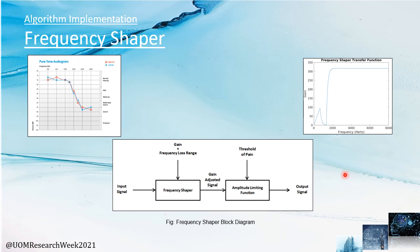The final step of the speech enhancement process is the gain adjustment of the hearing aid. For that, we used a frequency-shaping function. According to each hearing-impaired individual, referring to their audiogram, we can set the hearing loss range and the gain needed to make that range audible to the patient. We also control the maximum output so as not to surpass the pain threshold of the individual. Here you can see an audiogram of a patient with high-frequency hearing loss, and here is the gain-adjusted signal for that patient.